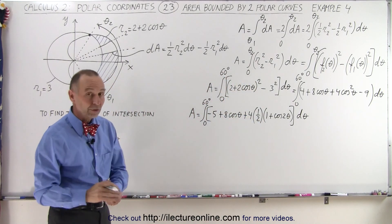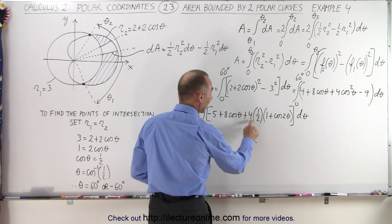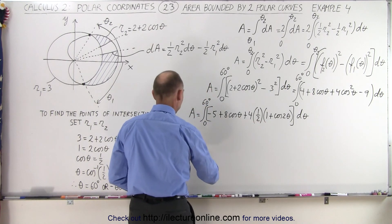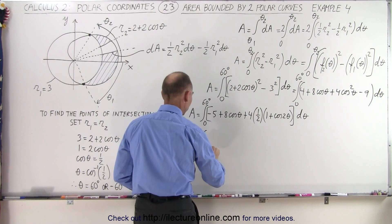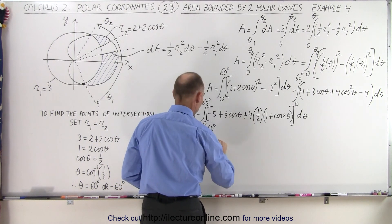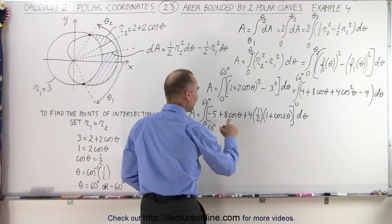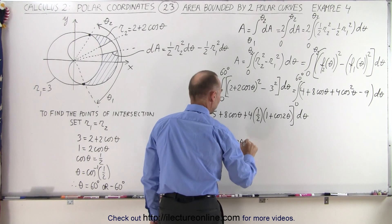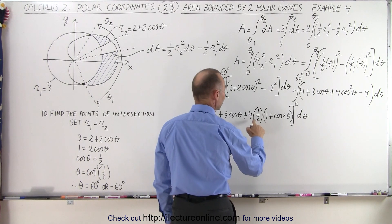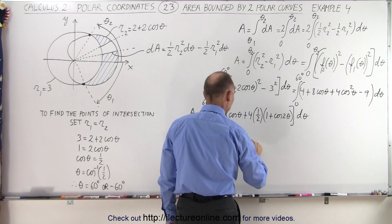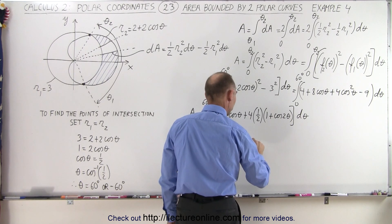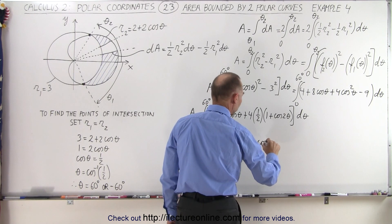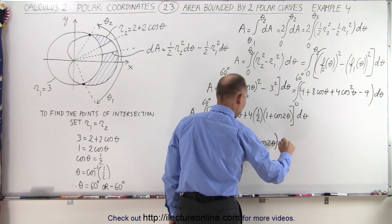Simplifying further: 4 times one-half is 2, and 2 times 1 added to minus 5 gives minus 3. So the area equals the integral from 0 to 60 degrees of minus 3 plus 8 cosθ plus 2 cos 2θ, times dθ.